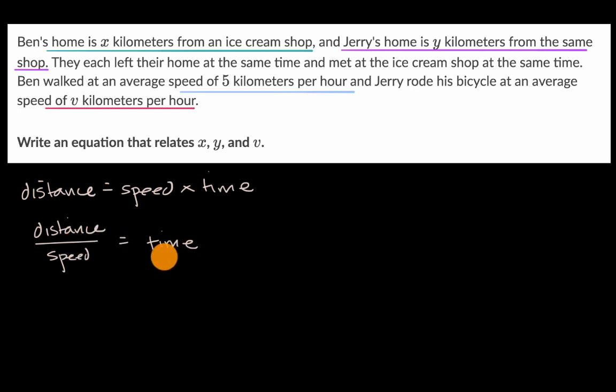Now, the reason why I set it up this way is that we know Ben's time and Jerry's time is the same. They covered maybe different distances at maybe different speeds, but it took them the exact same amount of time.